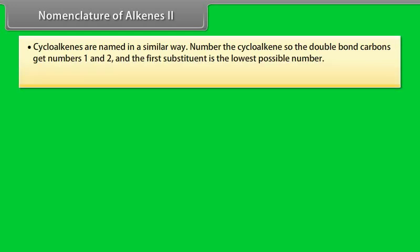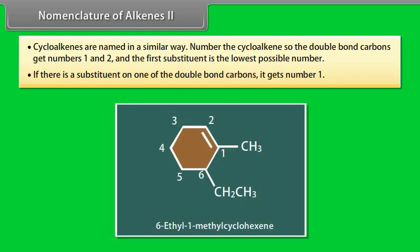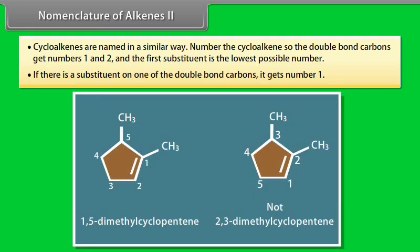Step 9: Cycloalkenes are named in a similar way. Number the cycloalkene so the double bond carbons get numbers 1 and 2 and the first substituent gets the lowest possible number. If there is a substituent on one of the double bond carbons, it gets number 1. For example: 6-ethyl-1-methyl-cyclohexene. Look at this compound — it is named as 1,5-dimethyl-cyclopentene and not 2,3-dimethyl-cyclopentene.